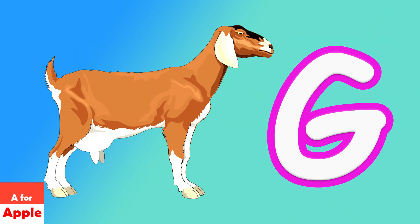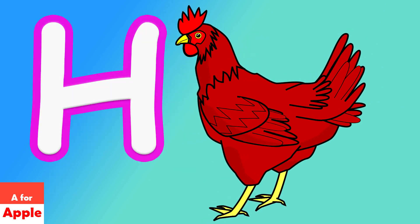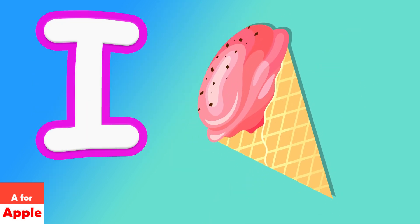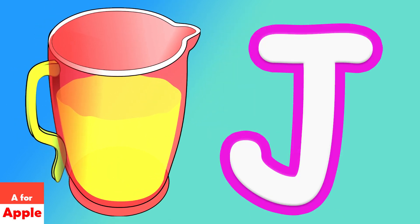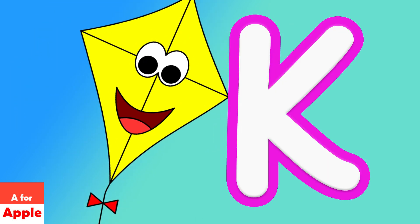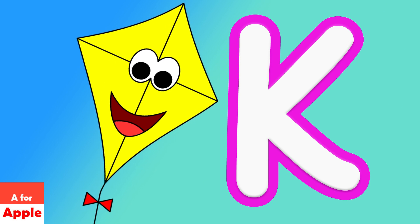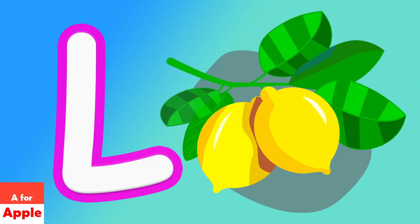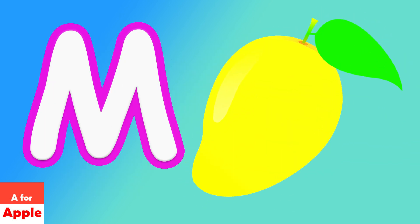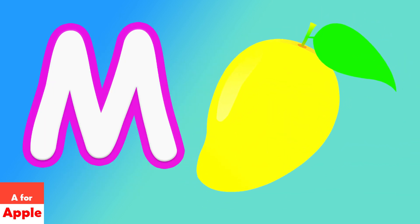G for goat, H for hen, I for ice cream, J for jet, K for kite, L for lemon.